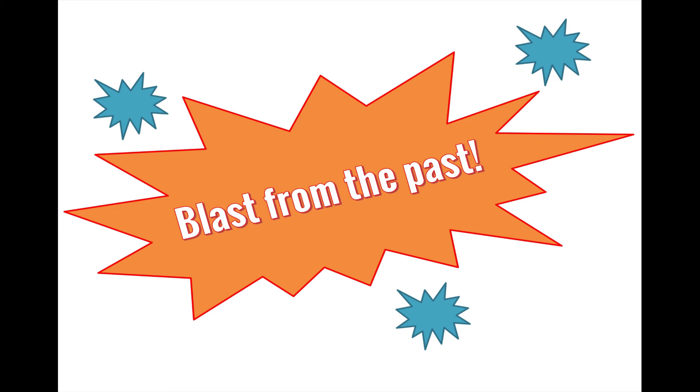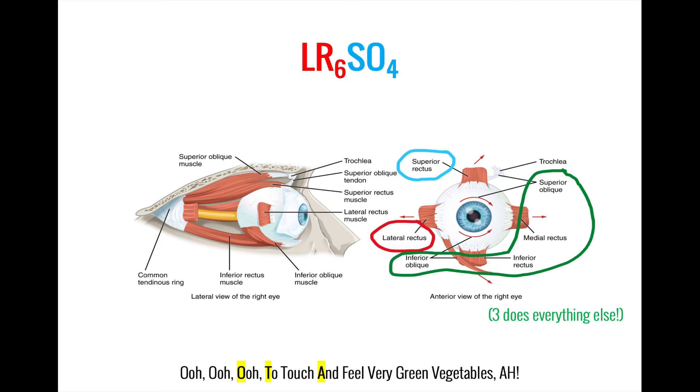Okay, time for a third blast from the past. In the last video, we discussed the three cranial nerves that are responsible for extraocular movements. To improve our understanding of these nerves, let's see what happens when each of these nerves becomes dysfunctional.